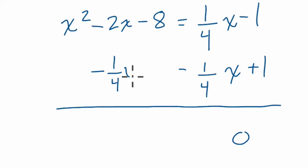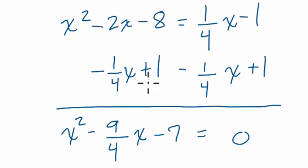On the left side, we subtract one-fourth x and add 1. So we have x squared minus 2 and a fourth x, or minus nine-fourths x, same thing. And then minus 7 equals 0, right? Negative 8 plus 1 is negative 7.